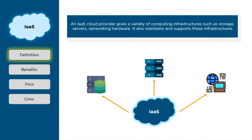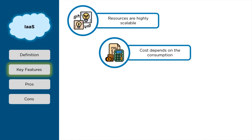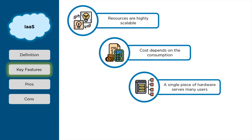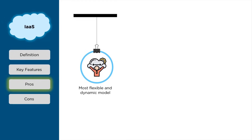Infrastructure as a Service: the cloud provider gives a variety of infrastructure such as storage services, network hardware, and so on. It also maintains and supports these infrastructures, and customers can access these resources over the internet. Resources can easily be scaled up and down. The cost depends on consumption — pay-as-you-go pricing. A single piece of server can serve many users, and the client has complete control over the architecture.